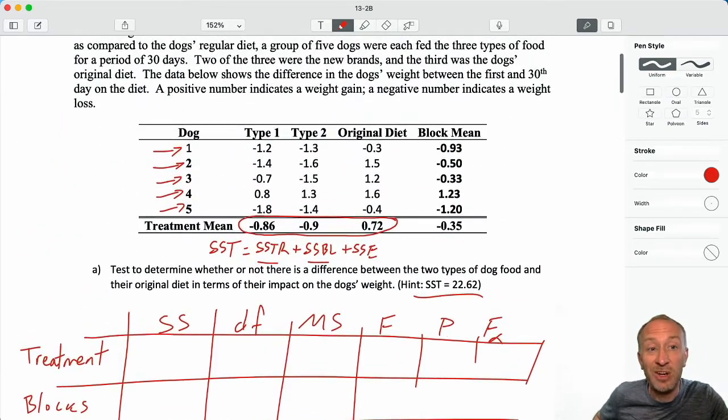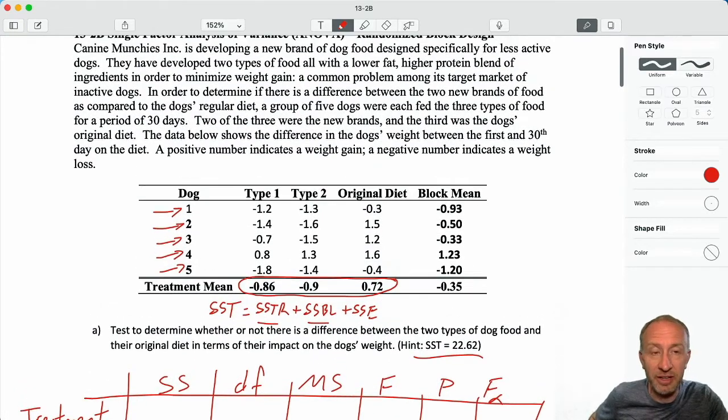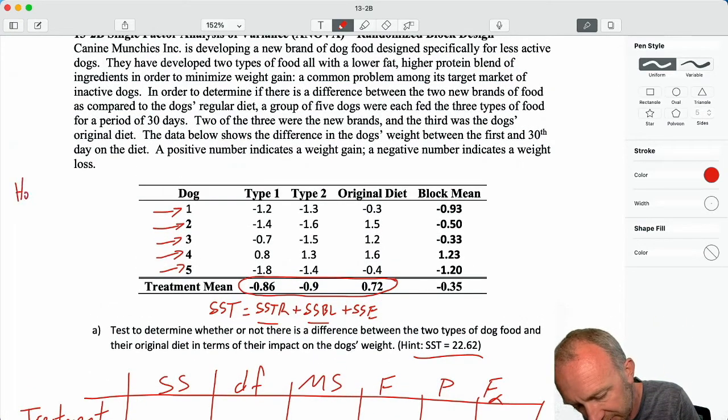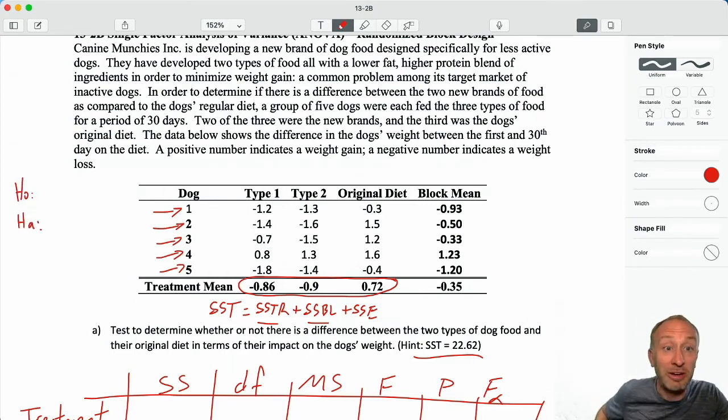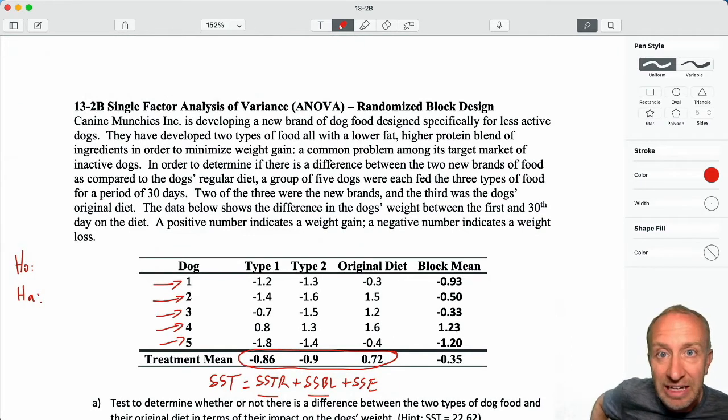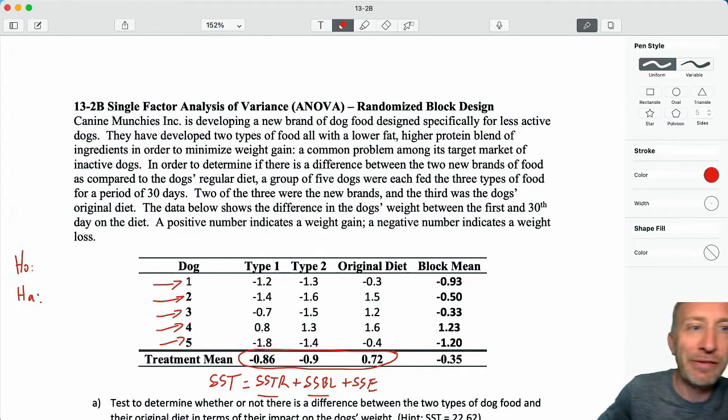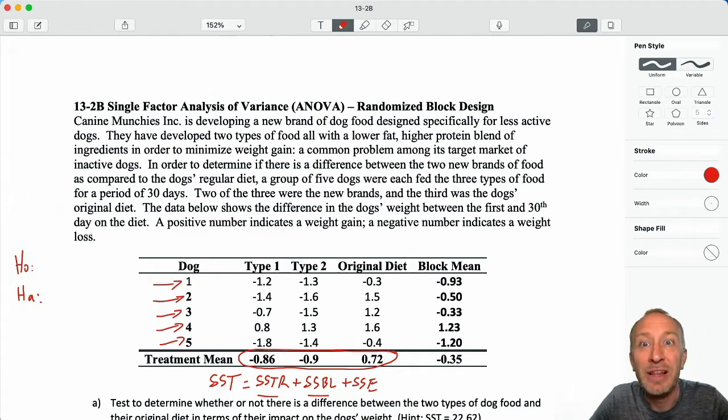In the first video I forgot to write the null and alternative hypotheses until the very end, so let's not make that same mistake. Here I'll have my null and alternative. Let's see what we're testing. Canine Munchies is developing a new brand of dog food designed specifically for less active dogs. They've developed two types of food, all with a lower fat, higher protein blend of ingredients in order to minimize weight gain, a common problem among its target market of inactive dogs.